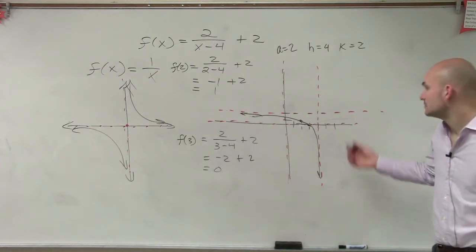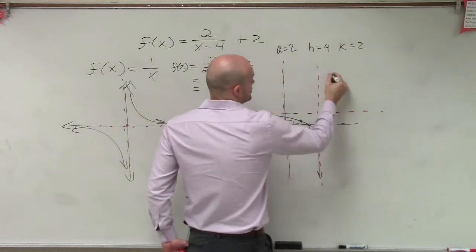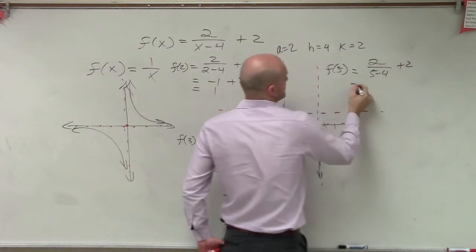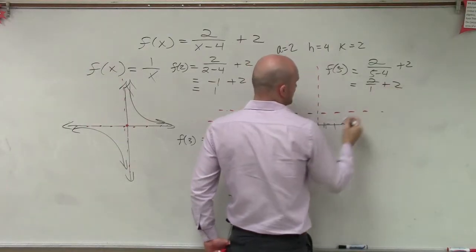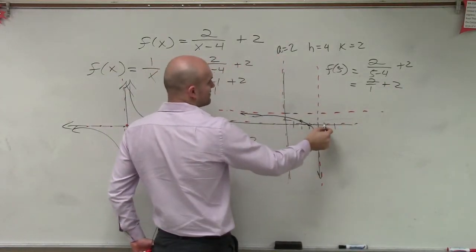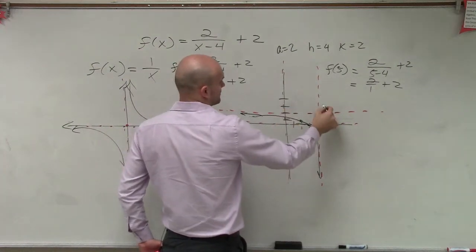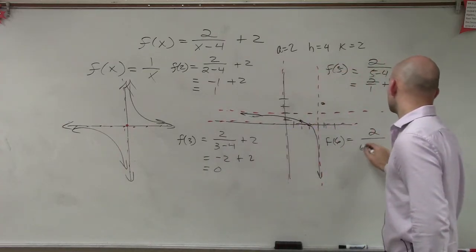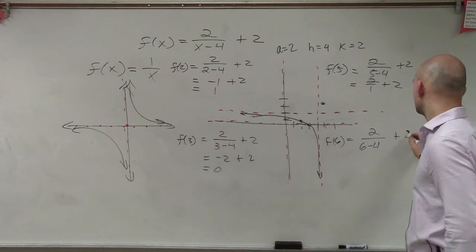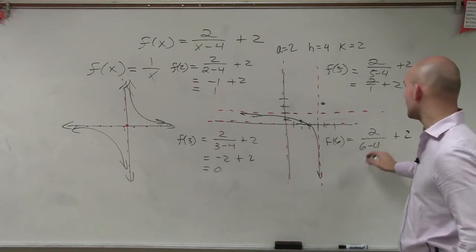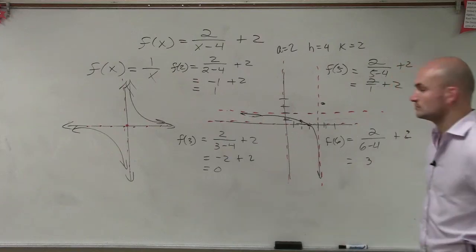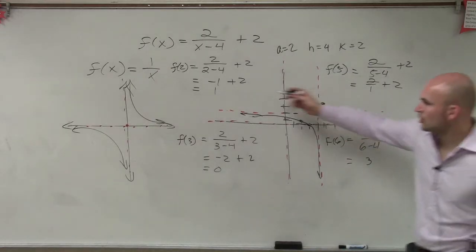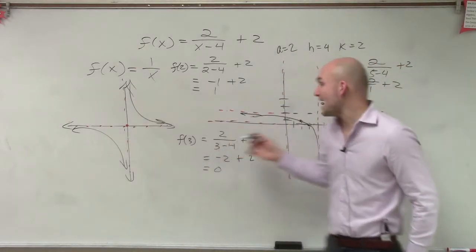And then if you do 5, which equals 4. Then I do 5. So I do f of 5, which equals 2 over 5 minus 4 plus 2, which equals 2 over 1 plus 2, which equals 4. So at 5, I have 1, 2, 3, 4. And then let's do f of 6. 2 over 6 minus 4 plus 2. So that becomes 2. 1, that becomes 3. So at 6, I get 3. And then again, you have these two points. We know they have to fall into this shape where they're going to approach both asymptotes.